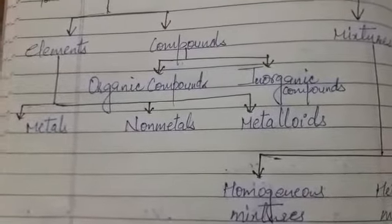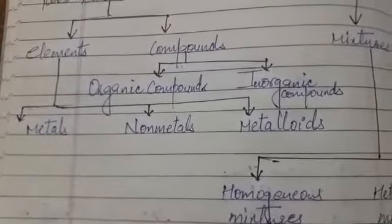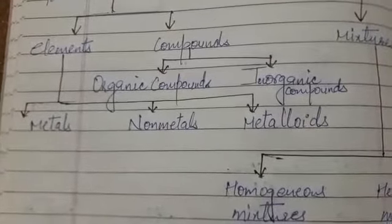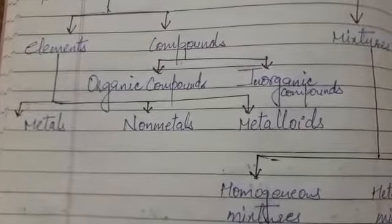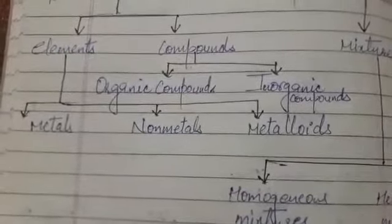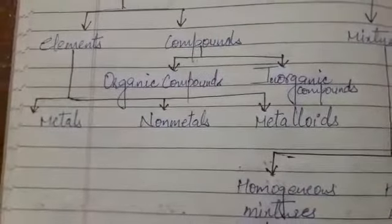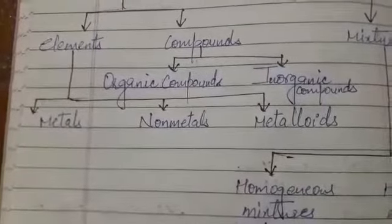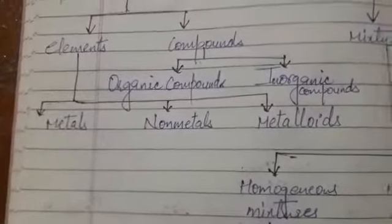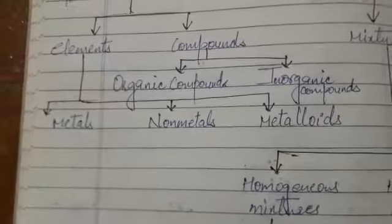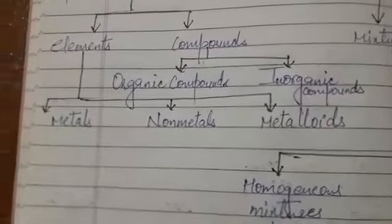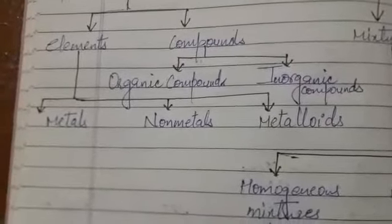Some examples of metals are aluminium, iron, gold, and silver. Whereas a few examples of non-metals are carbon, bromine, hydrogen, chlorine, etc.